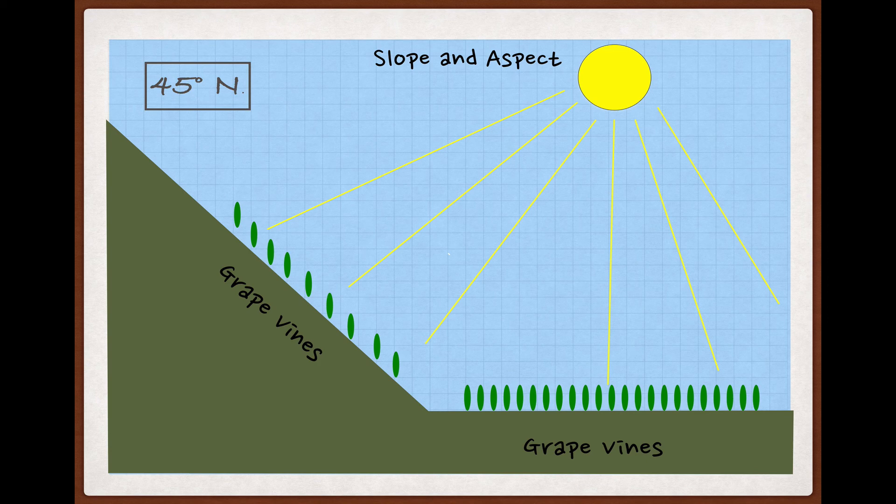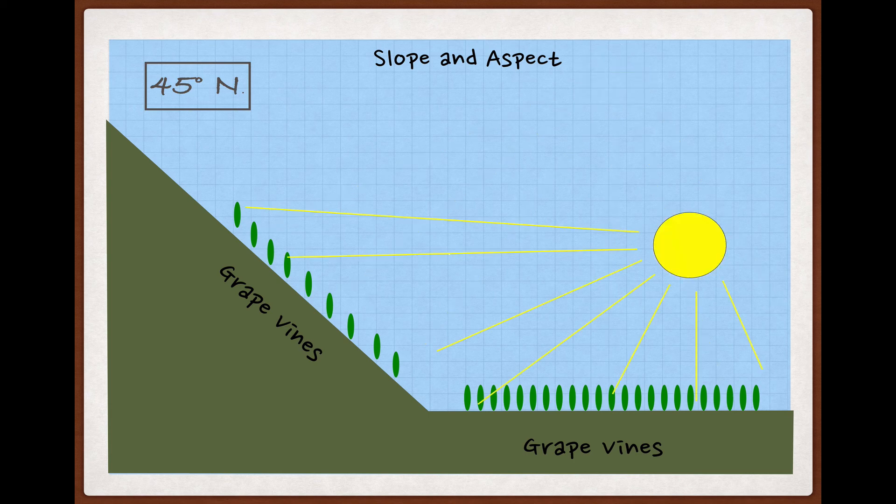But by the time harvest rolls around, usually sometime in late September or March depending on the hemisphere, thanks to the tilt of the earth on its axis, the sun will have crept lower in the sky.